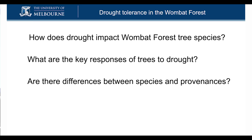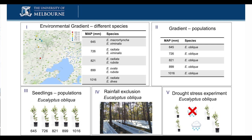Questions we then had: what's the drought impact on Wombat Forest tree species? What are the key responses of the trees to drought? How do they deal with drought in the first instance? And are there differences between tree species and provenances? We did a number of different experiments. On one hand, we had our environmental gradient — the drought gradient from Dalesford down to the Brisbane Ranges with different species. We also looked at different populations of Eucalyptus obliqua — messmate stringybark — since that's the most dominant species in the Wombat Forest where we work.